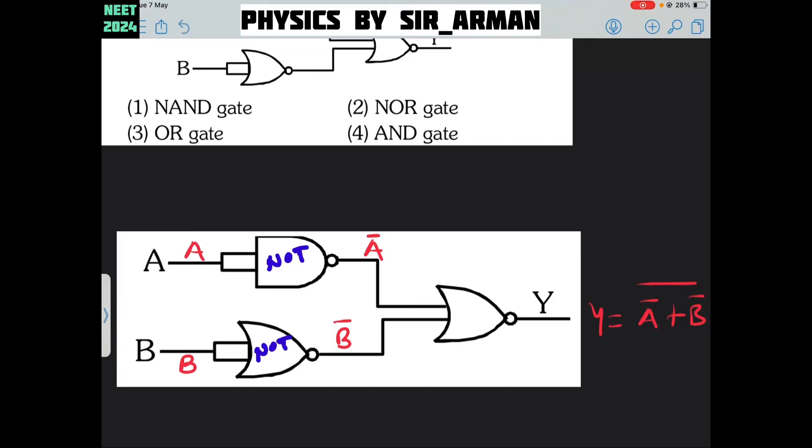Again, this behaves as a NOT gate. Why? Because here you can see this inverter is also put. If you give here A, the output will be A bar. If you give here B, the output will be B bar.